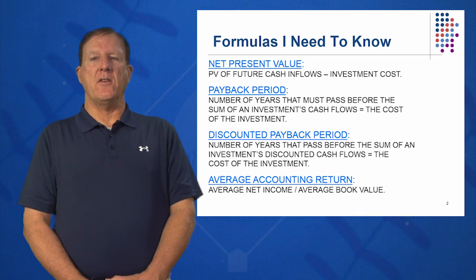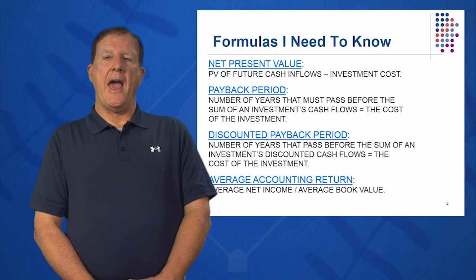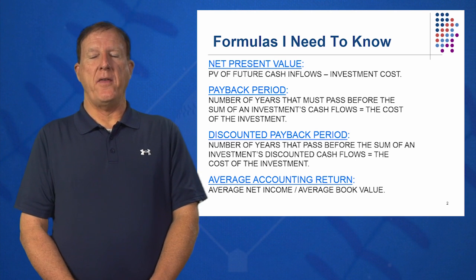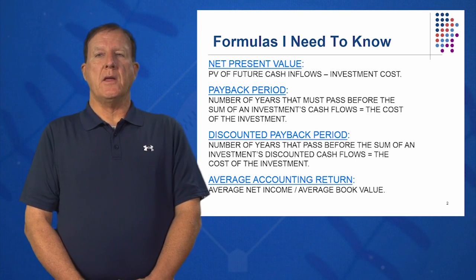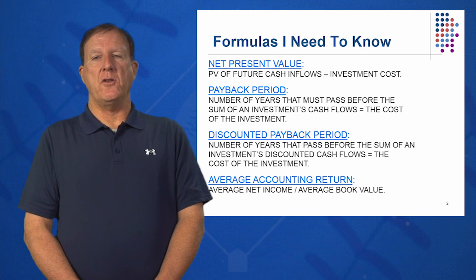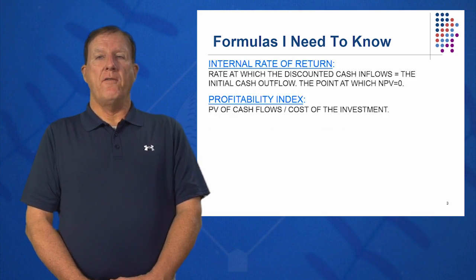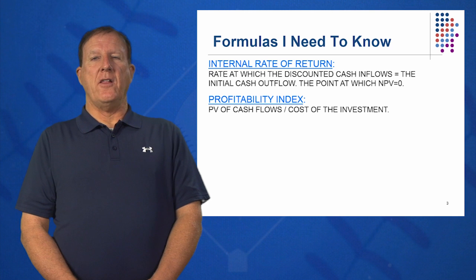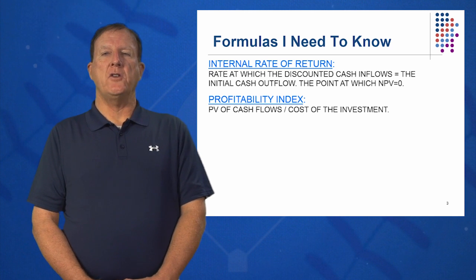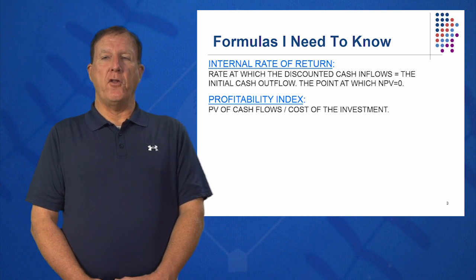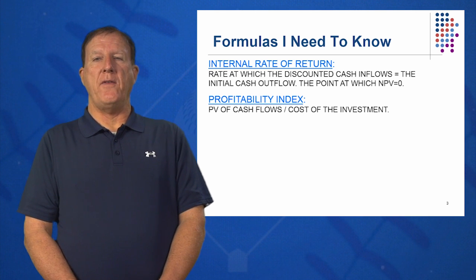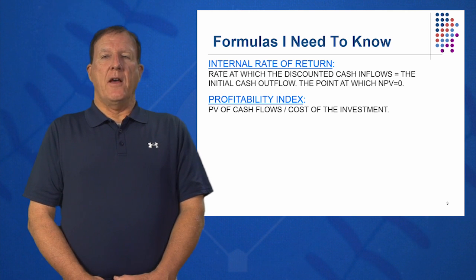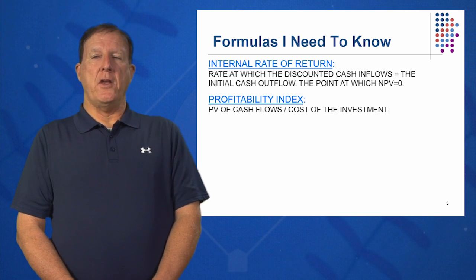Again, how long does it take to pay back this major investment? The fourth method we'll look at is average accounting return — average net income divided by average book value. Just by the equation, we know we need to calculate an income statement for five years and a balance sheet for five years and then look at the return on investment of this project. Fifth, we're going to look at internal rate of return, or DCF ROI. How do I calculate an internal rate of return? It's the rate at which my discounted cash inflows equals my cash outflow today, and the rate at which NPV equals zero. It's a very popular method that has some shortcomings, which we will discuss.